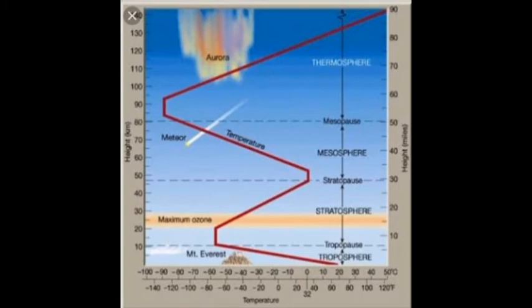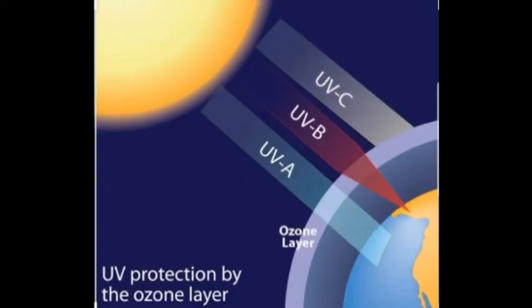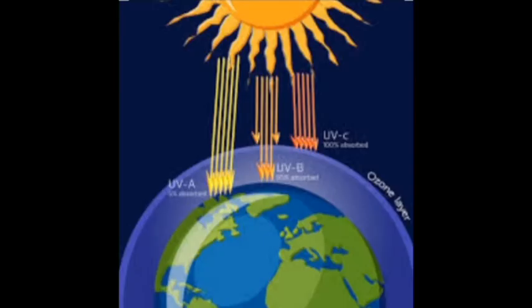The lower part of the stratosphere has a concentration of ozone (O₃), which protects the Earth from the harmful ultraviolet rays of the sun.